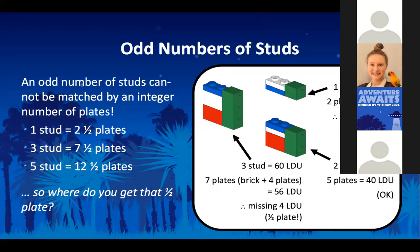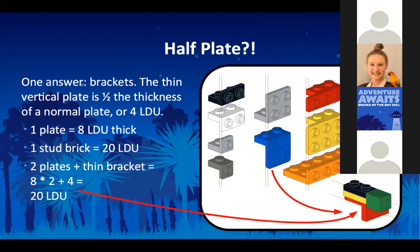There's also an example of a two-stud being equivalent to five plates. So where do you get that extra half plate? Sometimes you really need something that is as wide as it is tall in studs. The way you get that is using a bracket. All of these brackets have a thin part that is exactly half the thickness of a normal plate. The thickness of two plates plus the bracket is the same as the thickness of a stud.